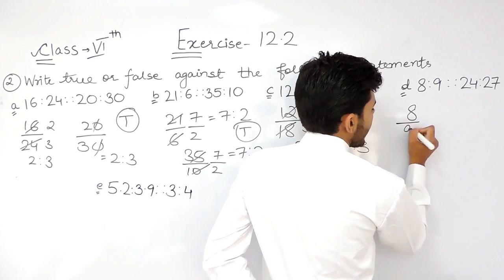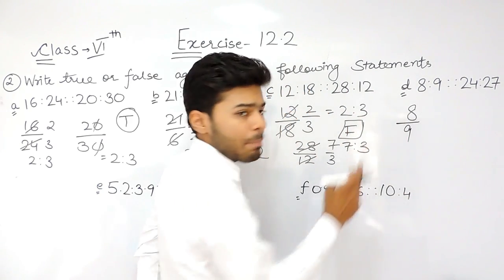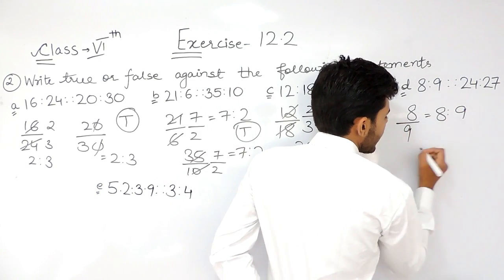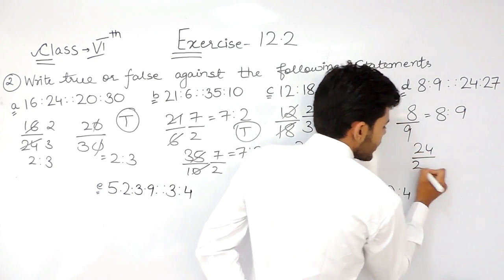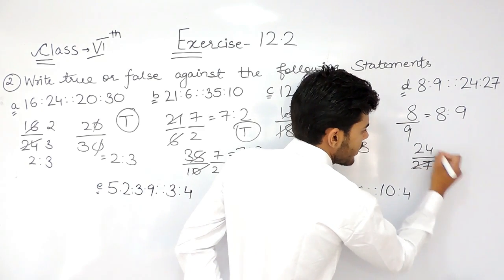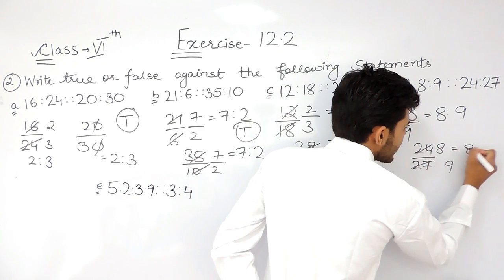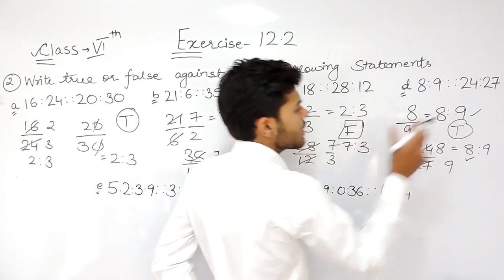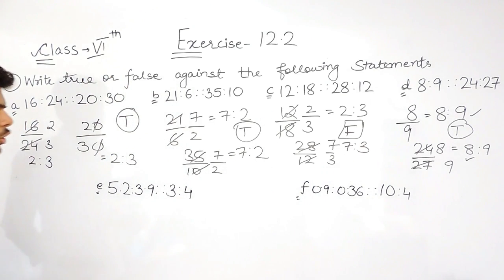Now 8 upon 9, this is already in its simplest form, so that will be 8 ratio 9. And 24 upon 27: 8 times 3 is 24, 9 times 3 is 27. Again it is 8 ratio 9. So both these ratios are equal to each other, that means they are in proportion. So we write true.